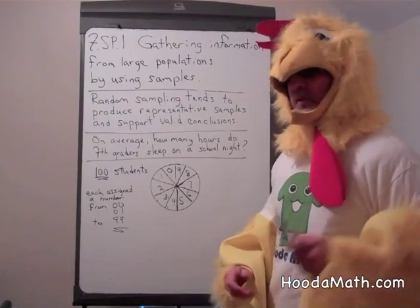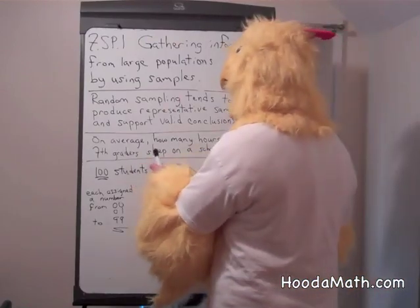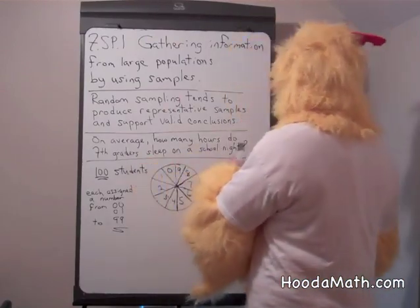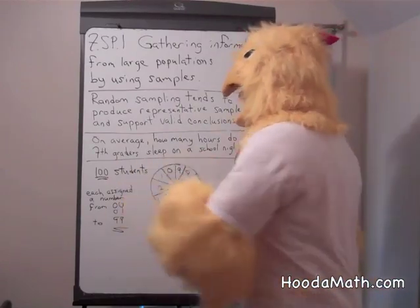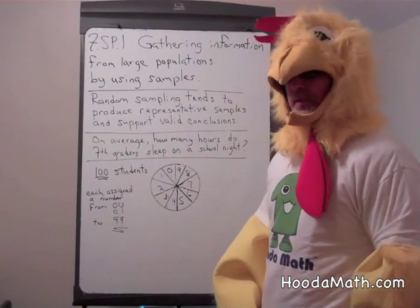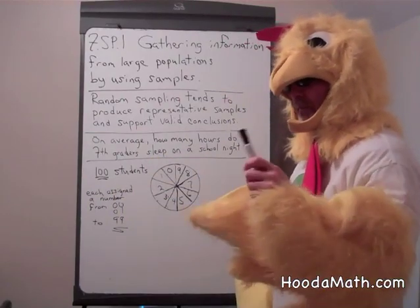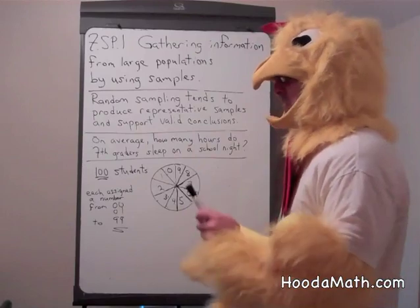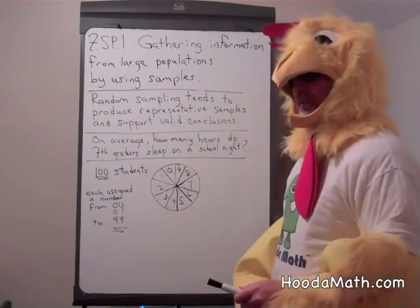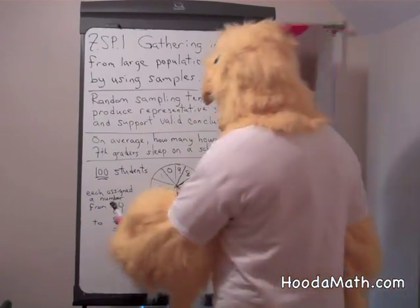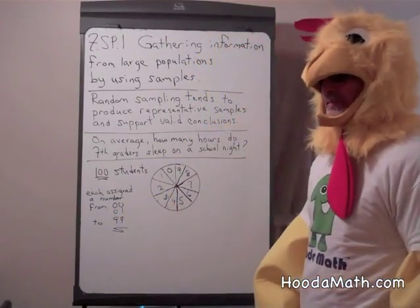I'm going to give you an example. On average, how many hours do 7th graders sleep on a school night? Let's say we had 100 7th graders in a school. What we could do is assign their names to a number — put the students in alphabetical order and start with 00 and go all the way up to 99. That's 100 numbers.